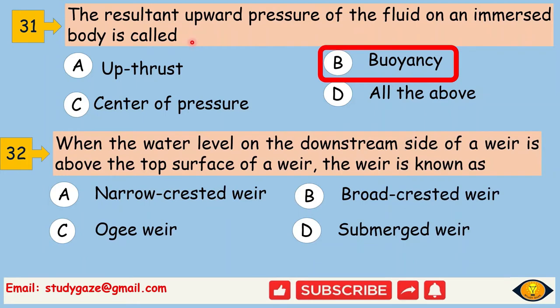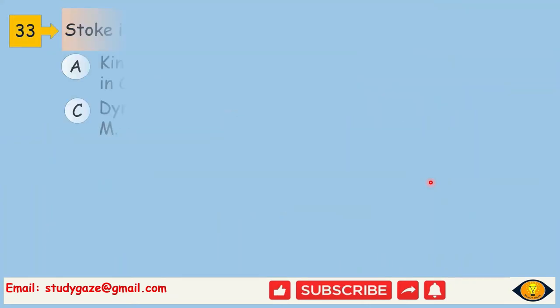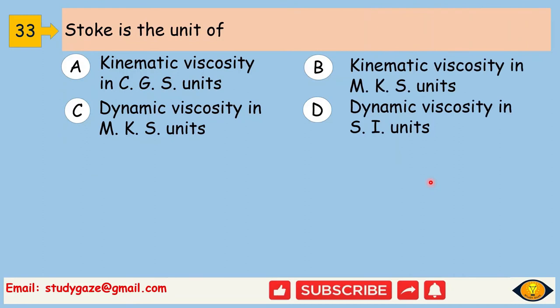When the water level on the downstream side of a weir is above the top surface of the weir, the weir is known as submerged weir. Stoke is the unit of kinematic viscosity in CGS units.